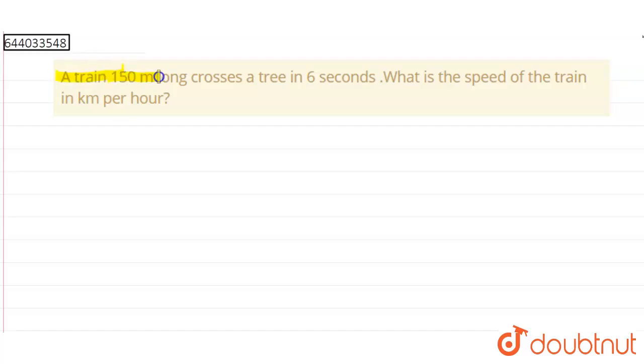Hello everyone. In this question, a train 150 meters long crosses a train in six seconds. What is the speed of the train in kilometers per hour? So first we will calculate the distance.